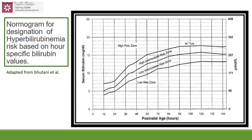The Bhutani nomogram designates hyperbilirubinemia risk based on hour-specific bilirubin values. The x-axis shows postnatal age in hours and the y-axis shows serum bilirubin levels. The chart classifies babies into low risk, low-intermediate risk, high-intermediate risk, and high risk zones, determining appropriate follow-up intervals.